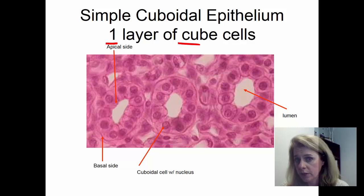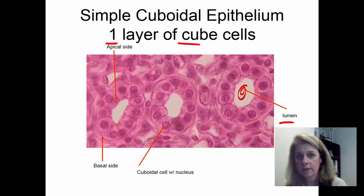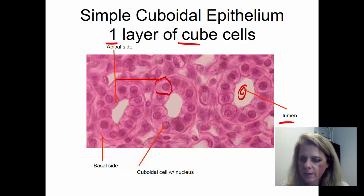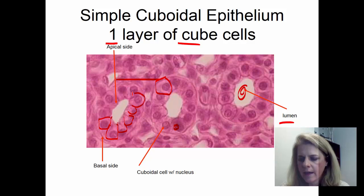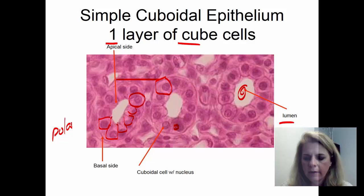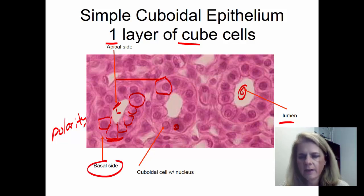You also have simple cuboidal epithelium — one layer of cube-shaped cells. A lot of times this forms some kind of a tube; this particular example is from a kidney and you're looking at kidney tubules. Whenever you have a tube, the space inside the tube is called the lumen — that's where the blood, urine, or whatever fluid is inside. These are your square-shaped cells, one layer all the way around making this tube. Remember that epithelial tissues have polarity — two sides that differ in structure and function.